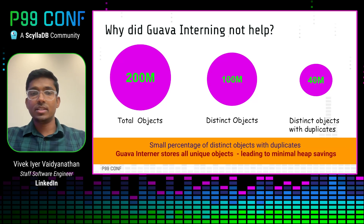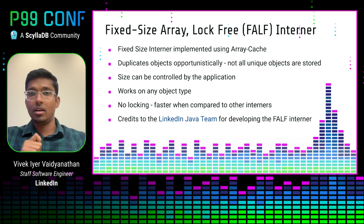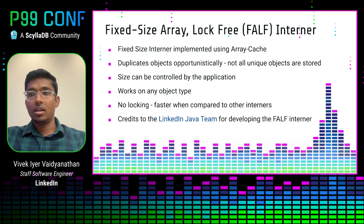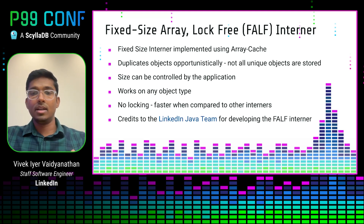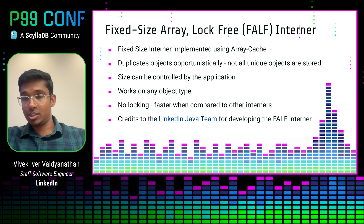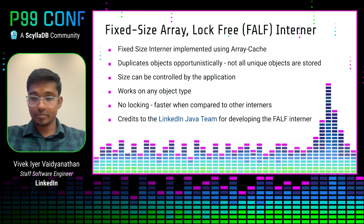And this is where the solution we eventually used was born. Let me introduce the Fixed-Size Array Lock-Free (FALF) interning technique, developed by the LinkedIn Java team. It is a fixed-size interning technique implemented using a fixed-size array cache. It deduplicates objects opportunistically, meaning not all unique objects necessarily have to be stored. Just like Guava interners, it supports any given object type and you can maintain isolated caches across your application. Additionally, there is no locking involved compared to the Guava interner, which means it's faster. Here is a rough pseudo code of our FALF interner.